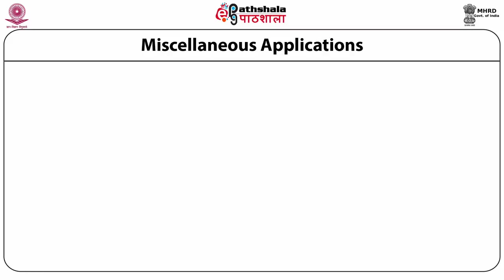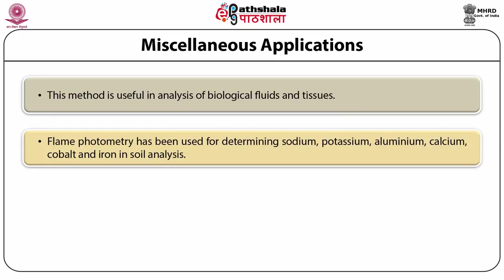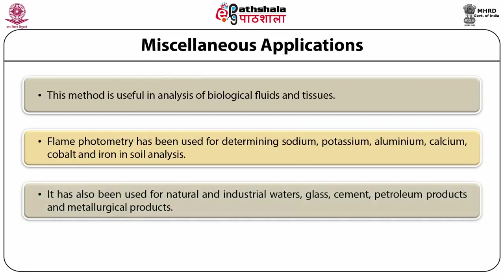Miscellaneous applications: flame photometry is important in the analysis of biological fluids and tissues, where elements like sodium, potassium, aluminum, calcium, cobalt, and iron are detected. It has been used for determining these elements in soils analysis, as well as in natural and industrial water, glass, cement, petroleum products, and metallurgical products. Boron has also been determined in various types of organic compounds.